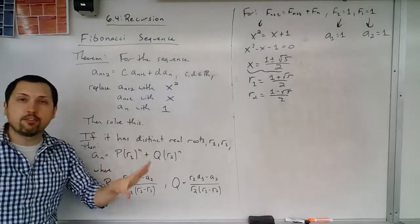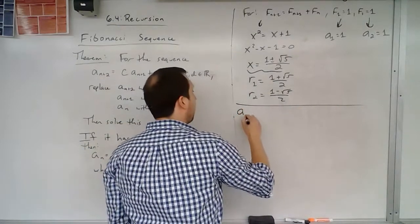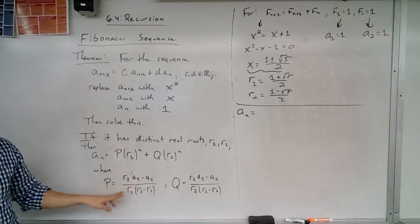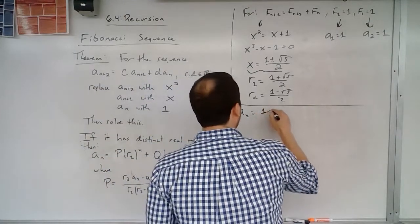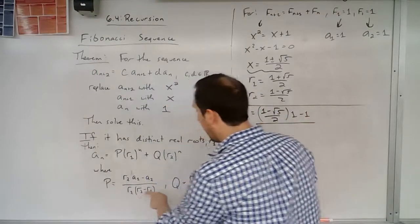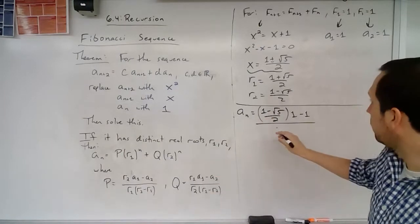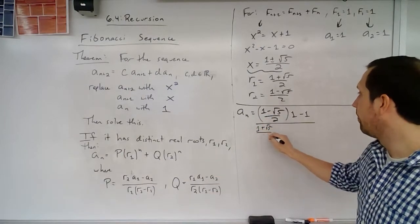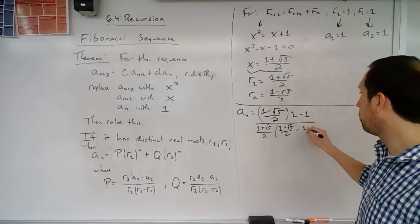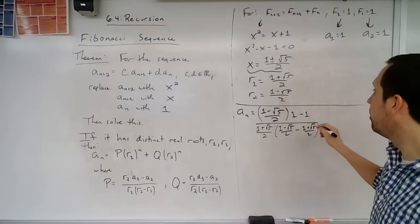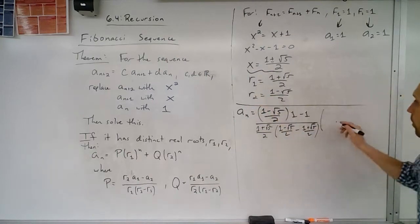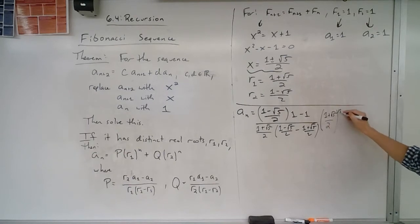So now I'm just going to plug things into the formula. So my a sub n, this is going to be found by taking r2 times a sub 1 minus a sub 2. So I'm going to take (1 minus the square root of 5) divided by 2 times 1 minus 1 divided by (1 minus (1 plus the square root of 5) / 2) minus (1 plus the square root of 5) / 2. So that is the P term. Then I have the r1, which was (1 plus the square root of 5) / 2 raised to the n.